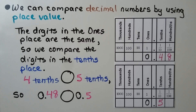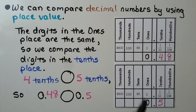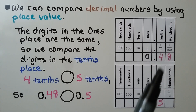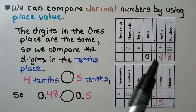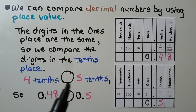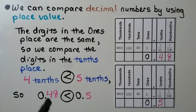We can compare decimal numbers using place value. The digits in the ones place are the same — they both have a zero — so we compare the digits in the tenths place. This has four tenths, this has five tenths. We know forty-eight hundredths is less than five tenths because four tenths is less than five tenths.